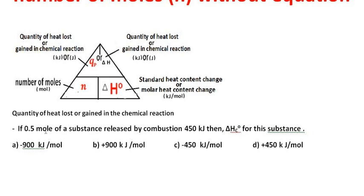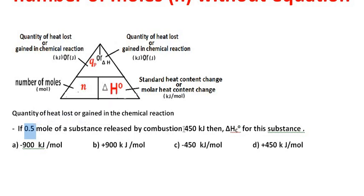For example, if half a mole of a substance released 450 kJ by combustion, then calculate delta H naught combustion. Delta H is 450 kJ and the number of moles N is 0.5. So divide 450 over 0.5 to get 900 kJ/mol. But in fact this is heat released, so the change in delta H is negative because this is an exothermic reaction which released heat.